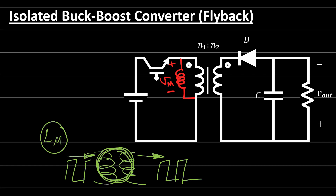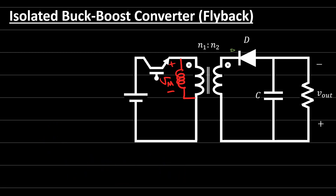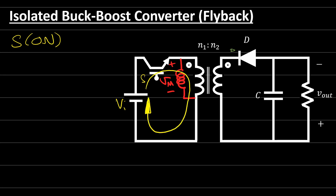If we have a primary current, then definitely current is going to the secondary and so on. Let's analyze the flyback converter circuit. When the switch is on, the input DC supply will start charging the transformer. The current will move to both the magnetizing inductance and the primary of the transformer. Since the primary current is going into the dot, the secondary current goes outside the dot, and diode D will be off. The primary current on the secondary side will therefore be zero.